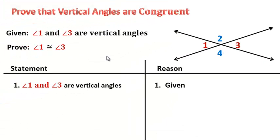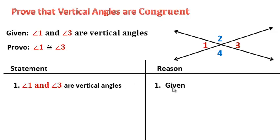When we are doing our proof, whatever we're given goes into the first line. This is called a two-column proof: the statements go on this side, and the reasons — our justification — go on this side. So we're going to start with: angle one and angle three are vertical angles, and of course that was our given information.